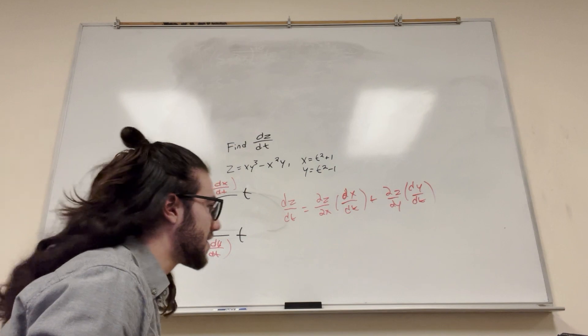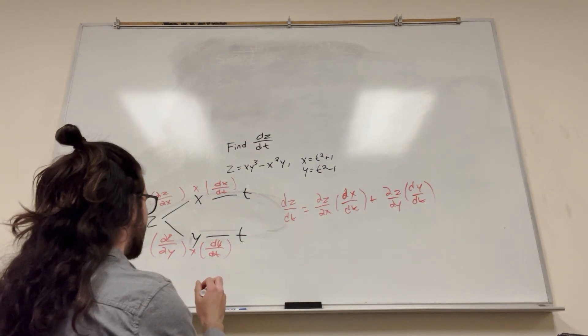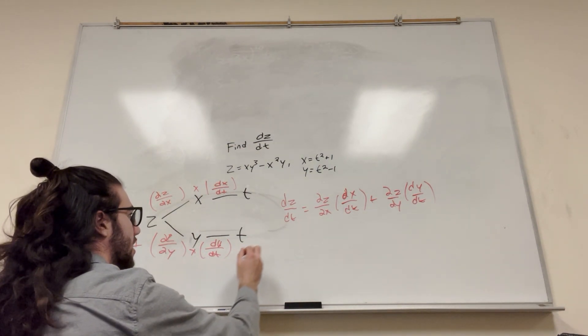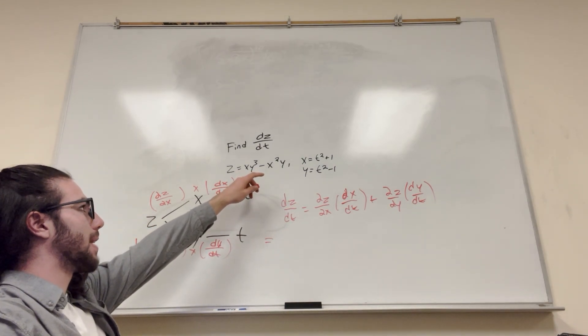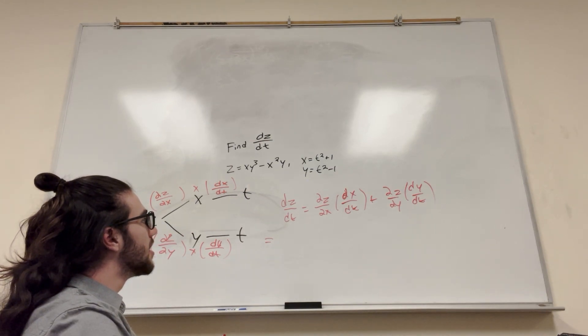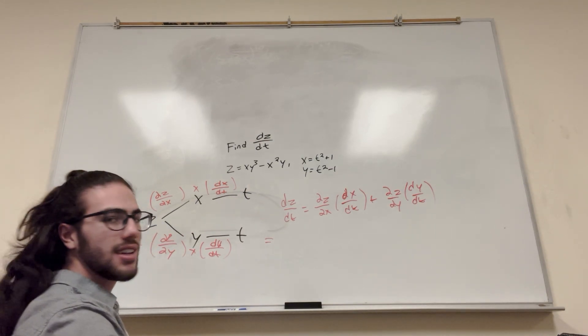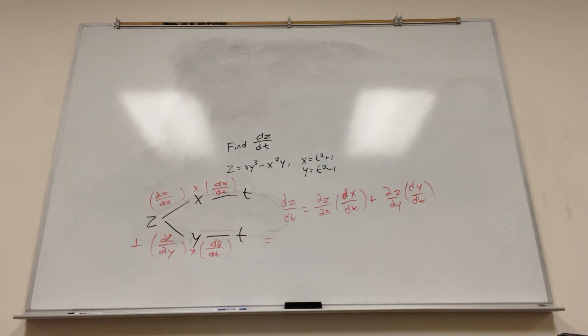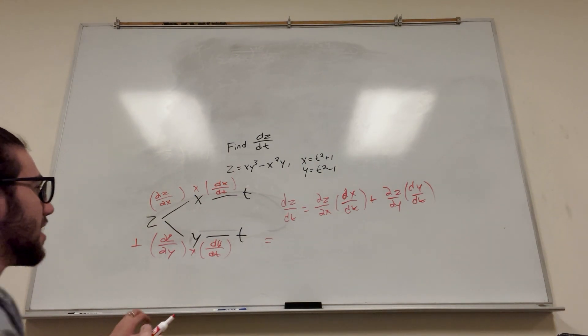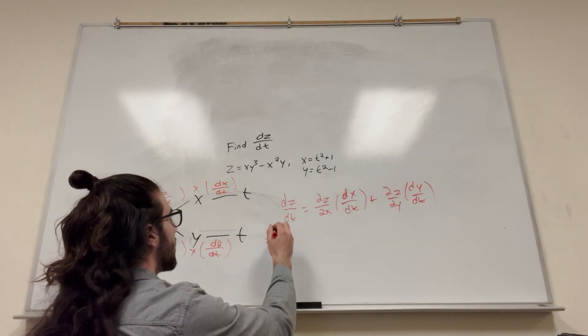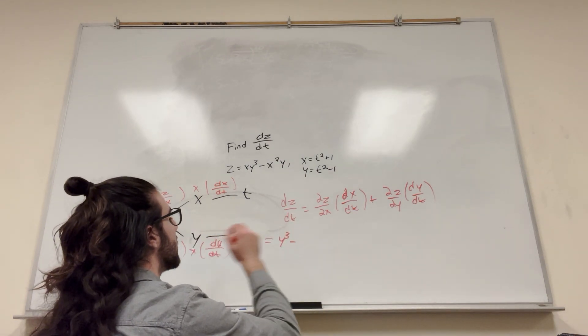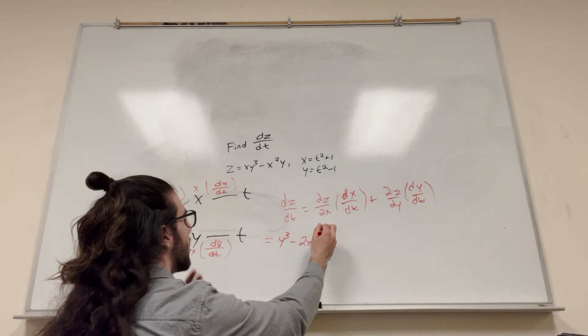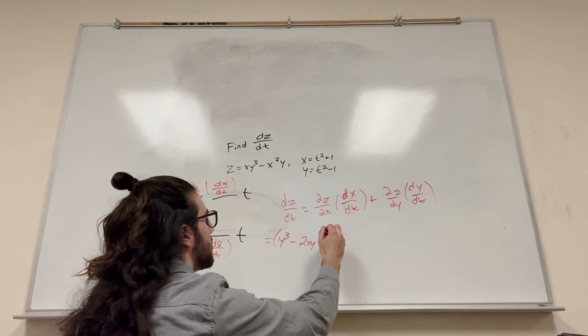Down here it's going to be equal to... Alright, so the derivative of z with respect to x is this with respect to x. So it's going to be... What? Hold on. Yep, okay. So it's going to be y to the third minus 2xy. All of this times the derivative of x with respect to t, which is 2t.